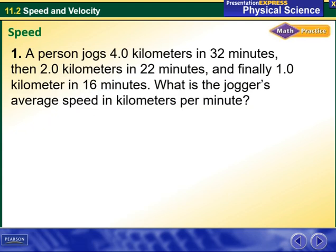A person jogs 4 kilometers in 32 minutes, then 2 kilometers in 22 minutes, and finally 1 kilometer in 16 minutes. What is the jogger's average speed in kilometers per minute?